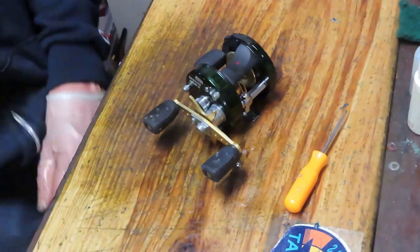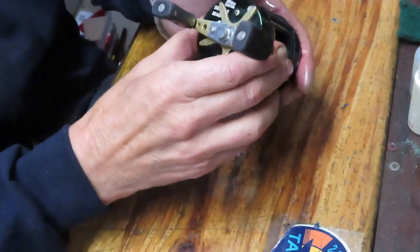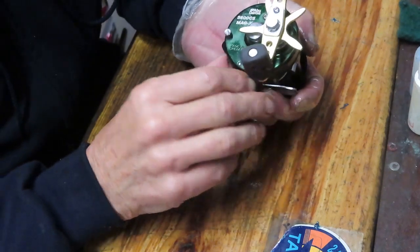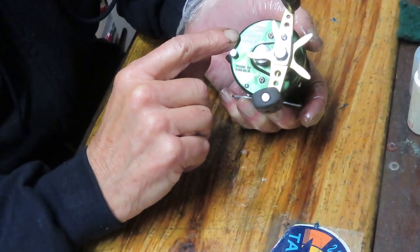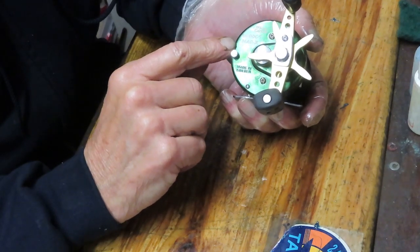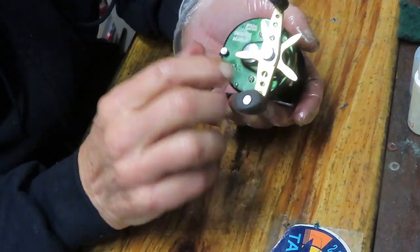Hi, this is Dennis with Second Chance Tackle. Today we're going to work on yet another Ambassador. I've worked on several of these. This one is an Abu Ambassador 5600 C5 MagX made in Sweden.